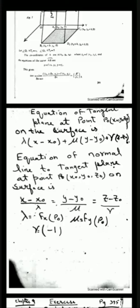The equation of the normal line to the tangent plane at point P₀(x₀, y₀, z₀) on the surface is: (x - x₀)/λ = (y - y₀)/μ = (z - z₀)/μ. These points are given in the question — for example, x₀ could be 2, y₀ could be 4, and z₀ could be 6, with 2 representing x₀, 4 representing y₀, and 6 representing z₀.